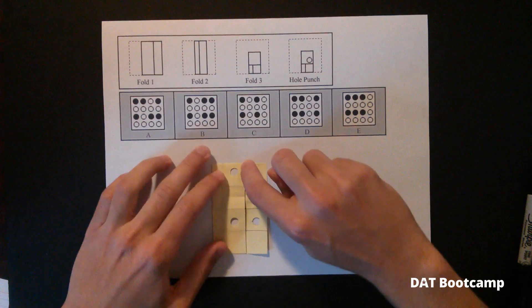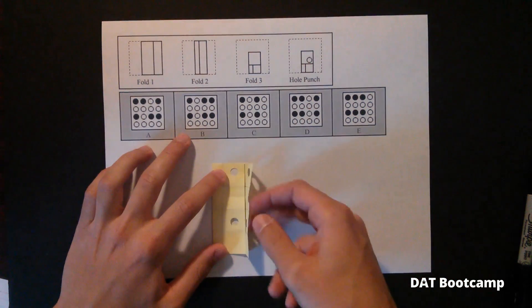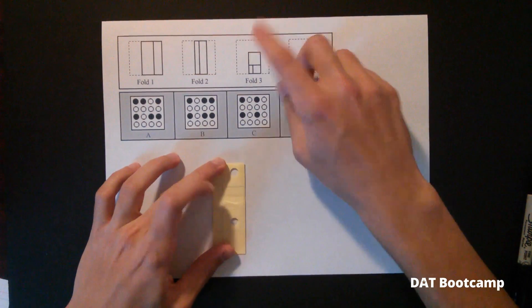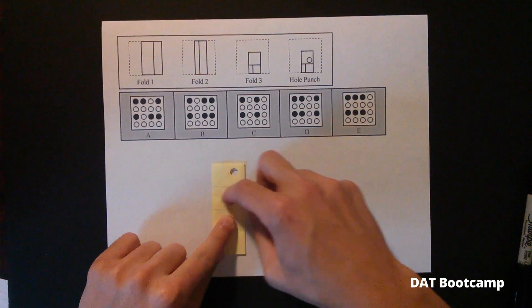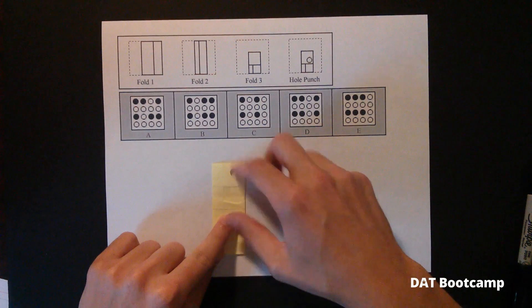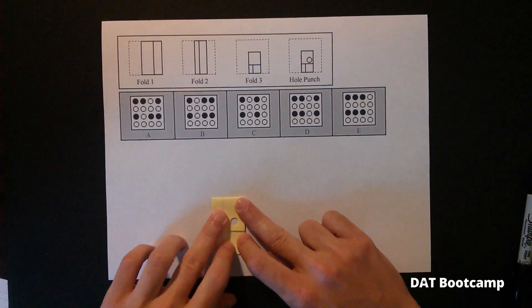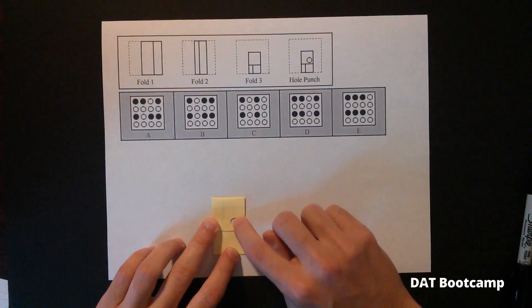Fold two is easy. Fold two is this normal quarter fold. Fold three again is another one-third fold. Right between the crease, right here where the circles are supposed to be, it is folded down. Then the hole is punched.